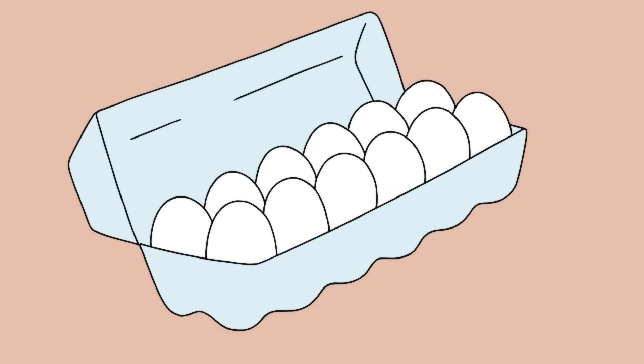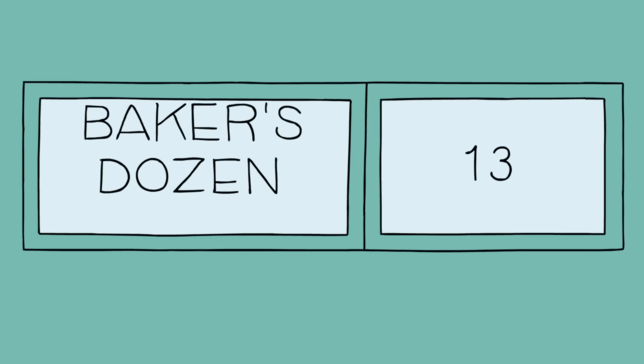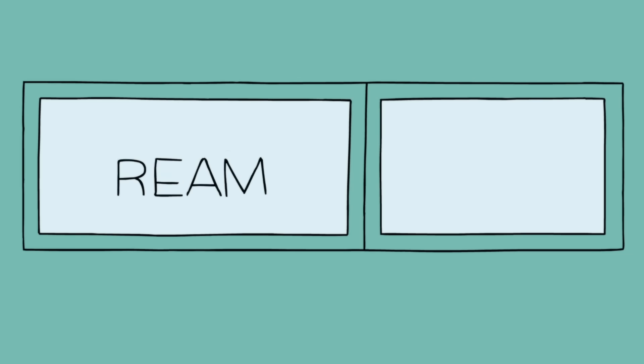When you buy your eggs, you buy a dozen eggs. When we hear the word dozen, we probably think of the number 12. We also know that a pair is 2, a baker's dozen is 13, a gross is 144, and a ream of paper is... anybody? A ream is 500.